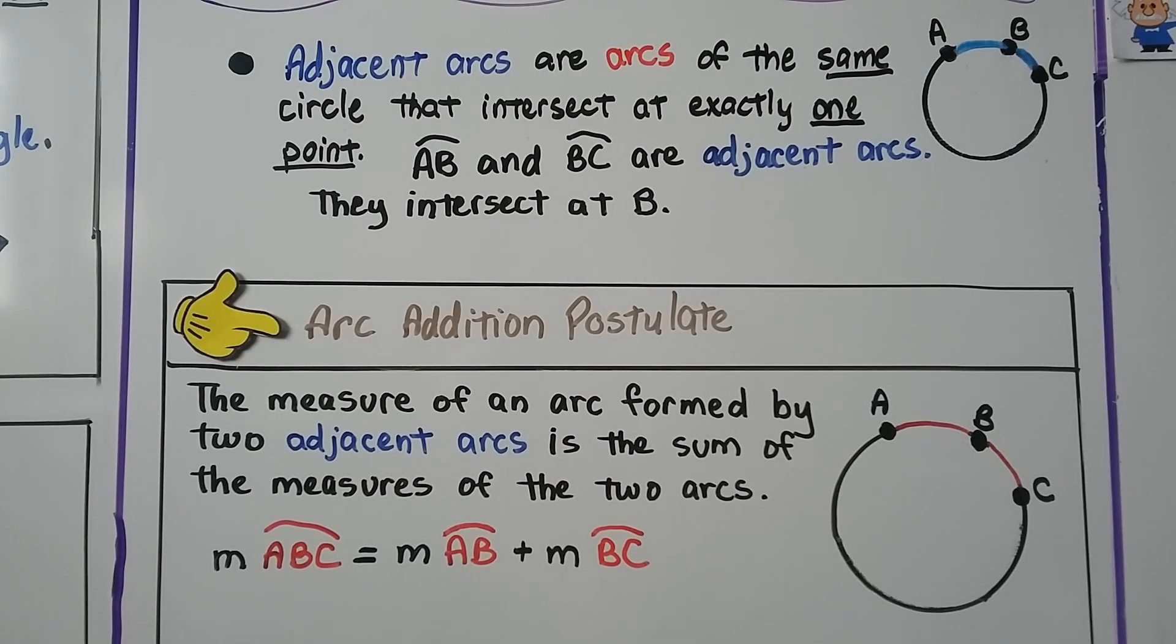Adjacent arcs are arcs of the same circle, like right here, that intersect at exactly one point. Arc AB and arc BC are adjacent arcs. They intersect at B. That brings us to more notes for the arc addition postulate. The measure of an arc formed by two adjacent arcs is the sum of the measures of the two arcs. So we would just add this arc and this arc. The measure of arc ABC is equal to the measure of arc AB plus the measure of arc BC.